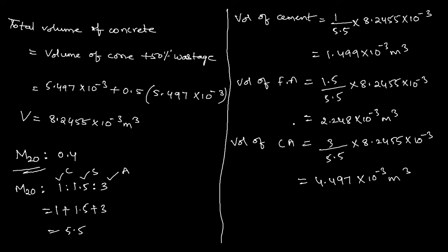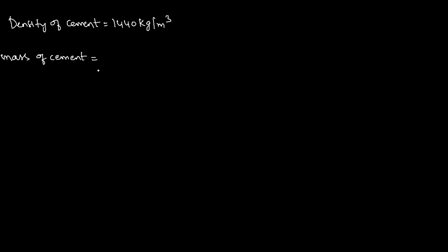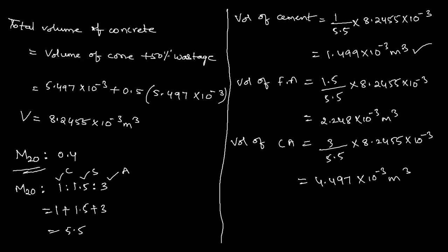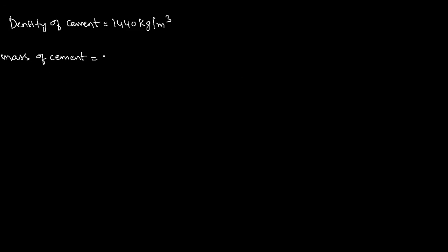Now we calculate mass using density: mass = density × volume. Assuming density of ordinary Portland cement = 1440 kg/m³, mass of cement = 1.499 × 10⁻³ × 1440 = 2.15 kg.